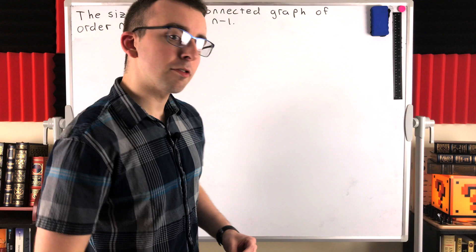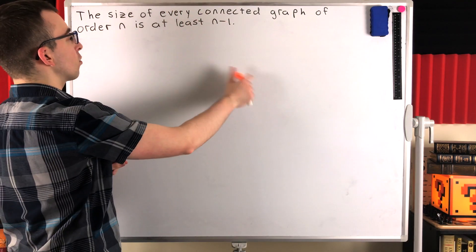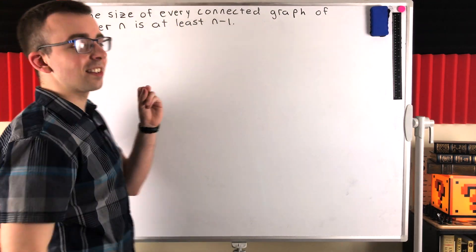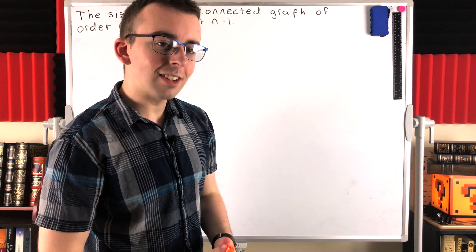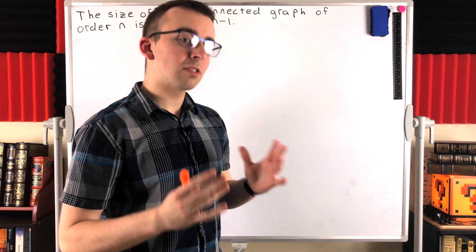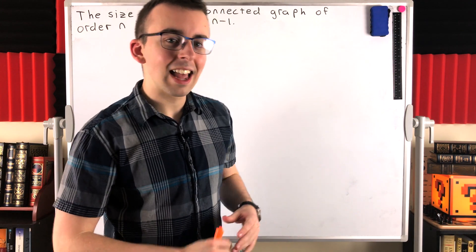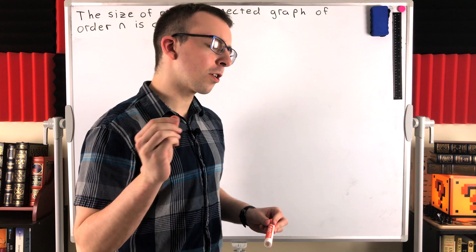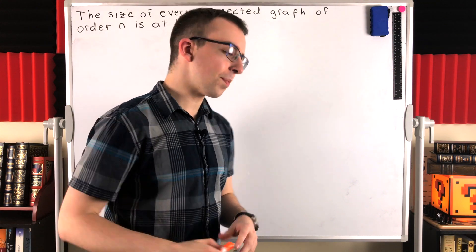For those of you not familiar with tree graphs: a connected graph of order n with exactly n minus 1 edges turns out will never have cycles. And connected graphs with no cycles are called tree graphs.